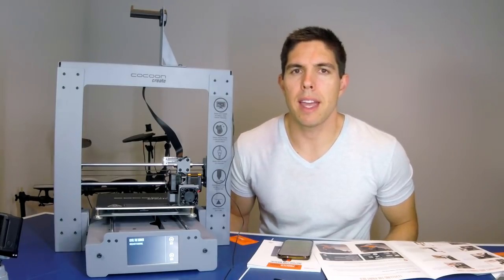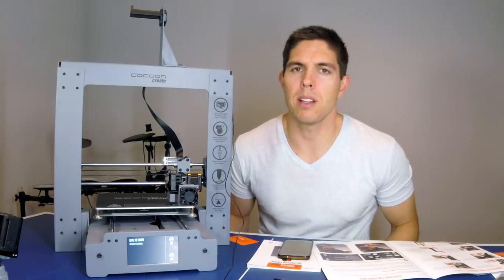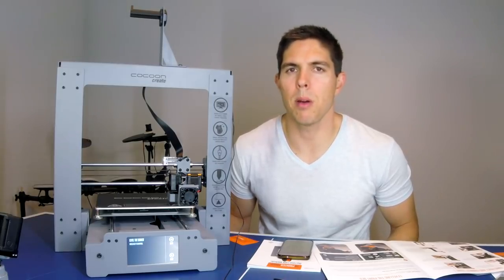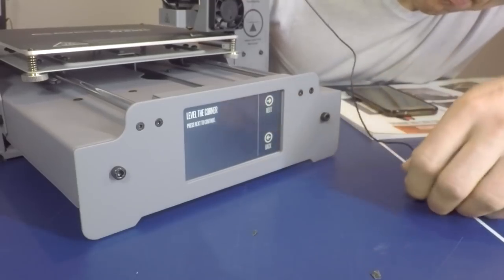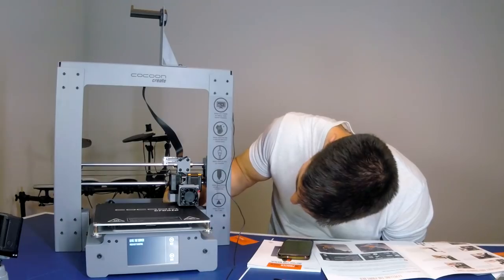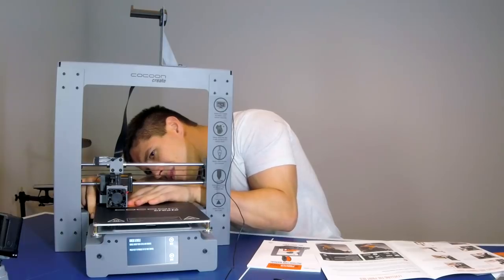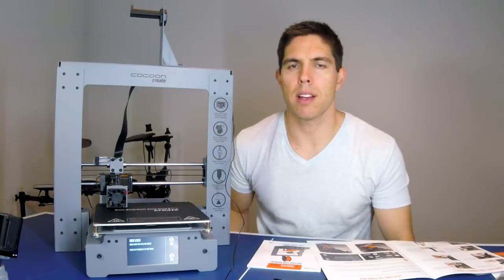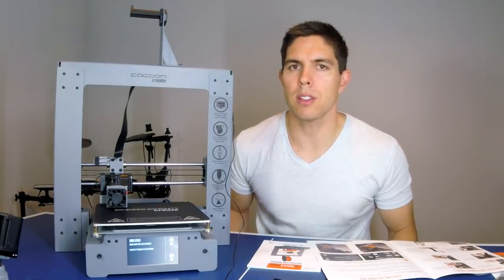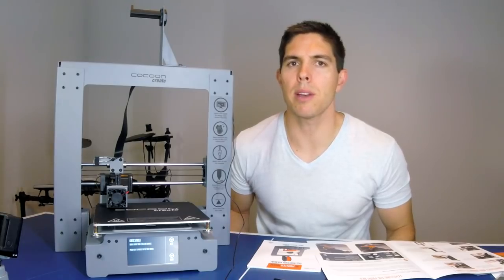So it turns out the X gantry was not in fact parallel with the bed. I've had to fight the stepper motor, turn the lead screw by hand and now it seems like it's just touching. So mission accomplished for now I hope. Okay that should be all four level. It could be a little bit off because I had to adjust the gantry but we'll see how we go from here.